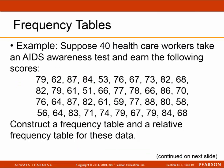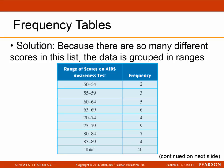Here's another example: 40 healthcare workers take an AIDS awareness test and earn the following scores. We're going to construct the frequency table and relative frequency table for this data. In class I'll show you how to get the classes — 50 to 54, 55 to 59, and so on — because there's a very specific procedure, and you have to be consistent.